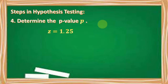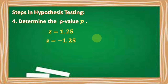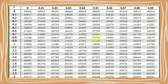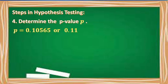Number four, determine the p-value given the computed Z-score of 1.25. For an easy way to find the p-value, we're going to use its opposite Z-score, which is negative 1.25. Looking up Z equals negative 1.25 in the Z-table — the first two digits in the first column, then the third digit in the first row — we get the intersection value of 0.10565. So our p-value is equal to 0.10565 or approximately 0.11.